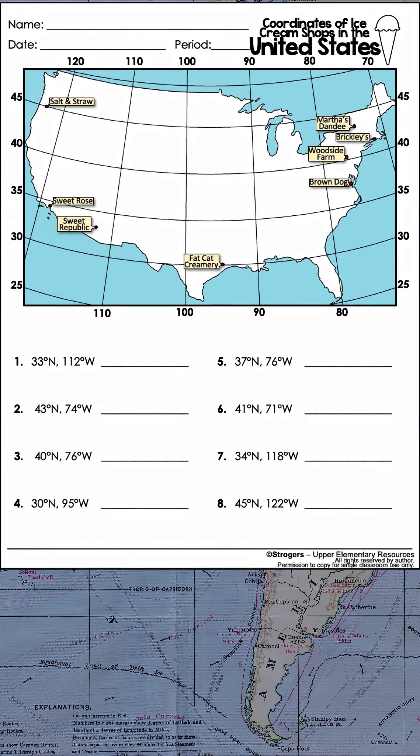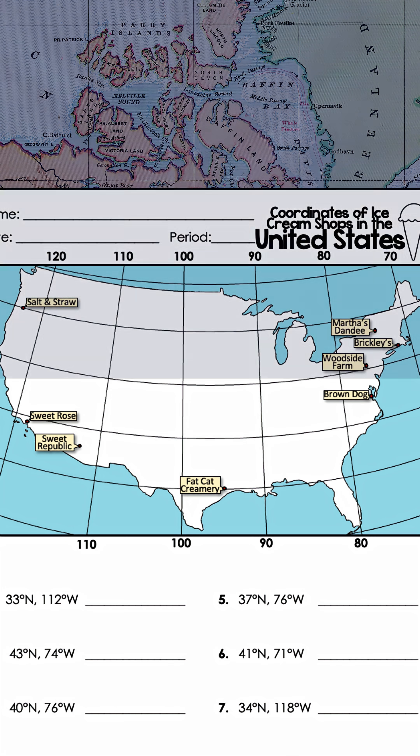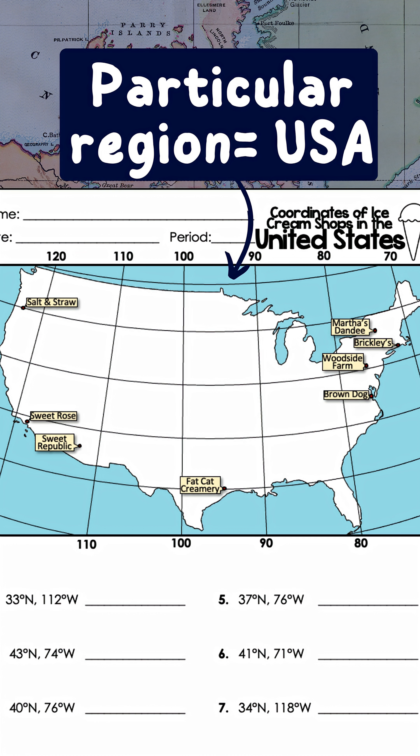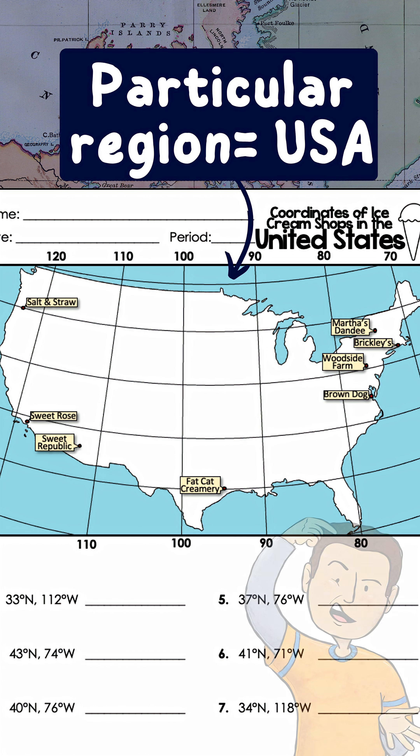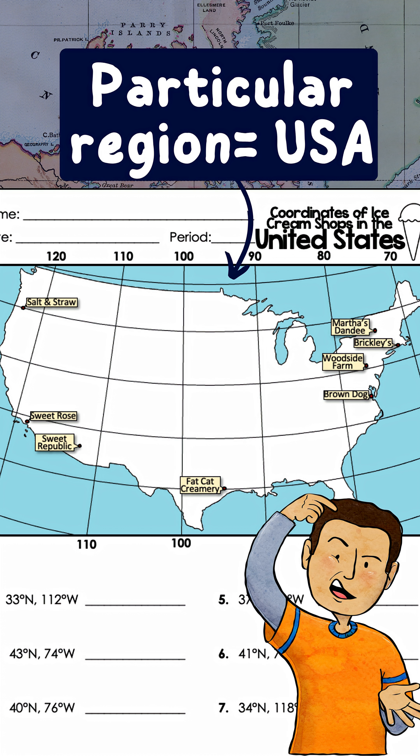If you've been given a latitude and longitude assignment on a particular region of the world and you can't remember how to find the coordinates, here's what you need to know.